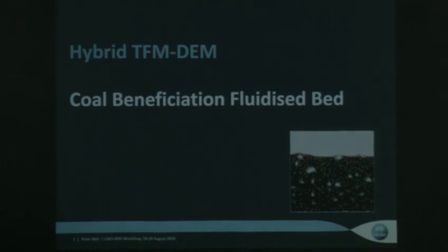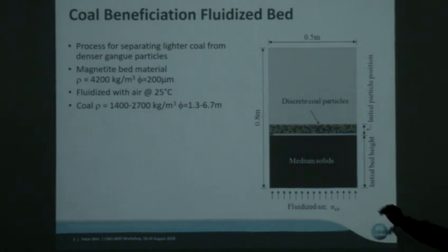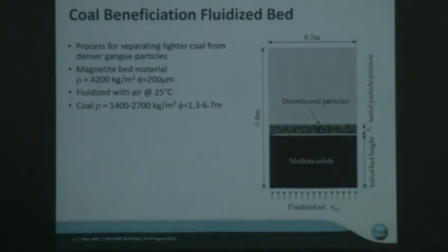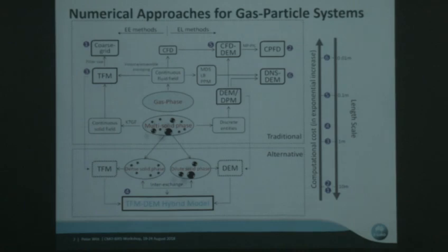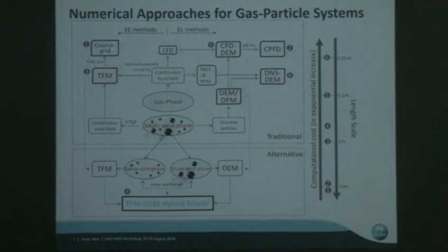The first thing I want to talk about is a coal beneficiation fluidised bed — some work done with a Chinese student. The problem is you have coal particles of order millimetres with varying density: sand particles at about 2600 kg/m³ versus about 1200 kg/m³ for coal. One way of separating them is to put them into a medium of magnetite, which has a density of about 4000 kg/m³, fluidise that with air, and you can then float off the light coal particles versus the denser particles. We decided to use a two-fluid model for the dense magnetite phase — gas bubbles, magnetite particles — then couple in a DEM model, developing what we call the hybrid model in the MFIX framework.